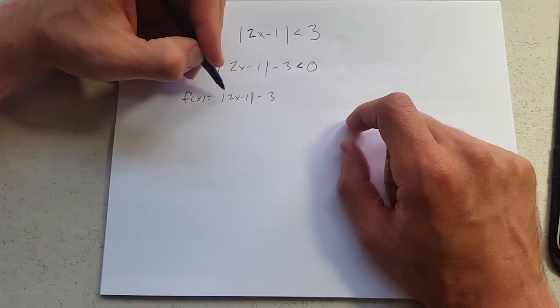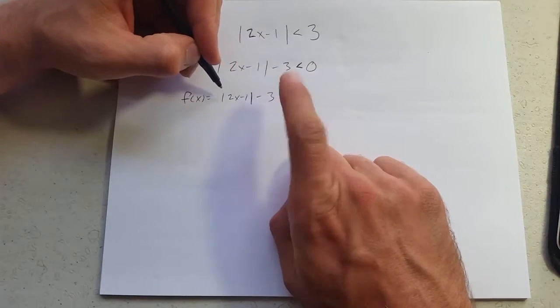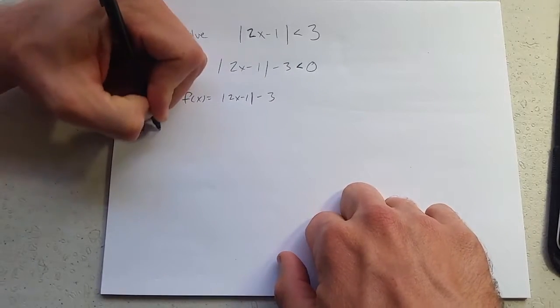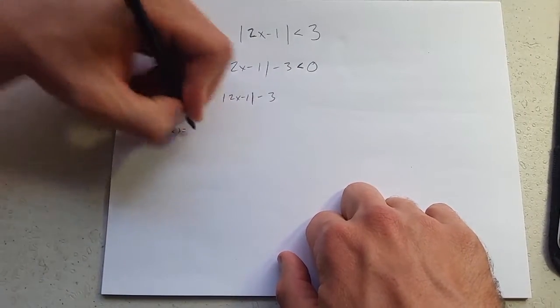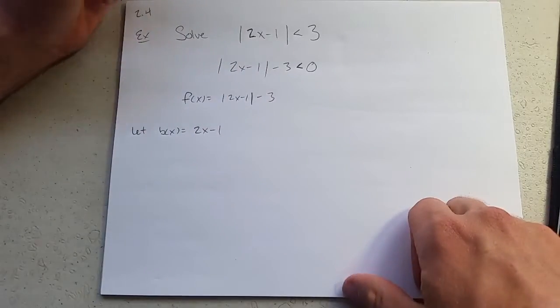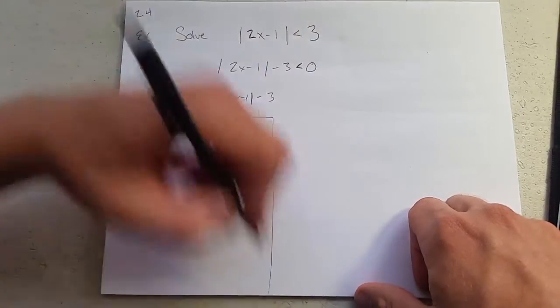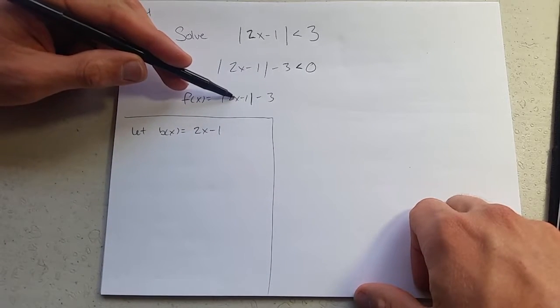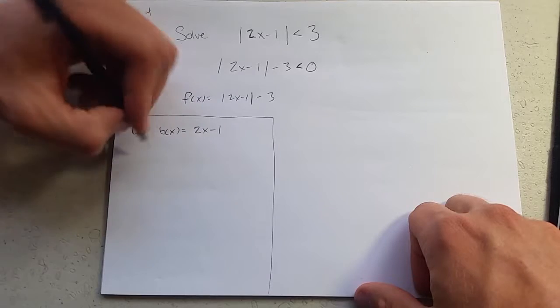So if I could graph 2x minus 1, all I need to do is shift it down 3. So I'm going to choose a b of x function to be 2x minus 1. So I'm going to do a little easier problem and then we're going to go back here and look at how we do a more difficult one.